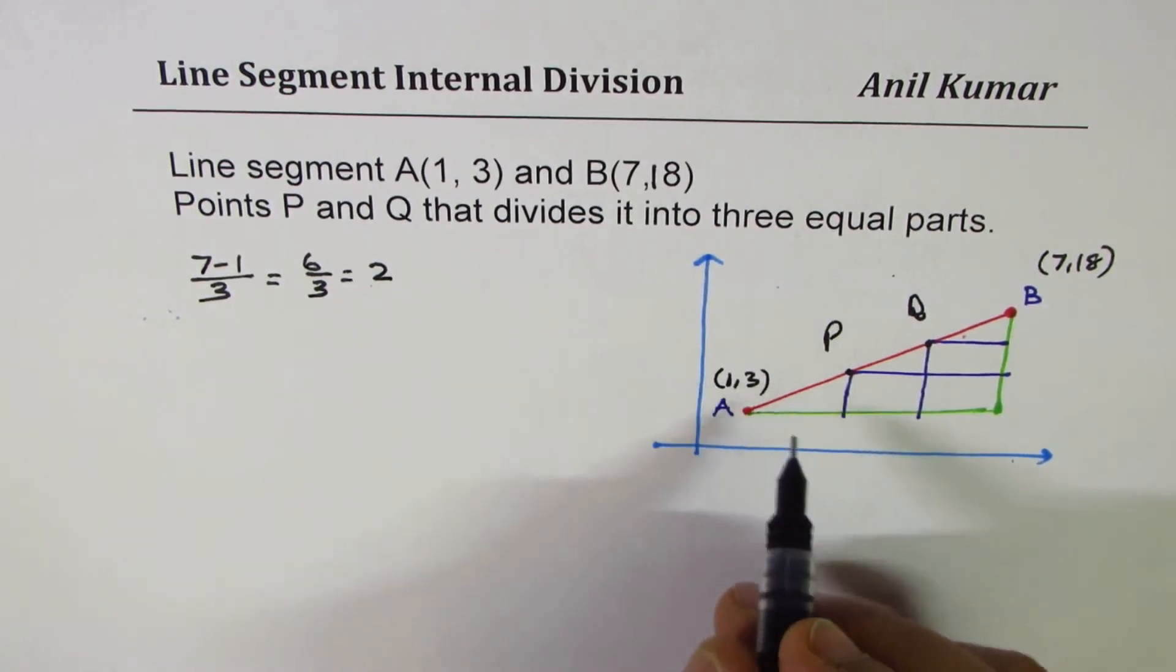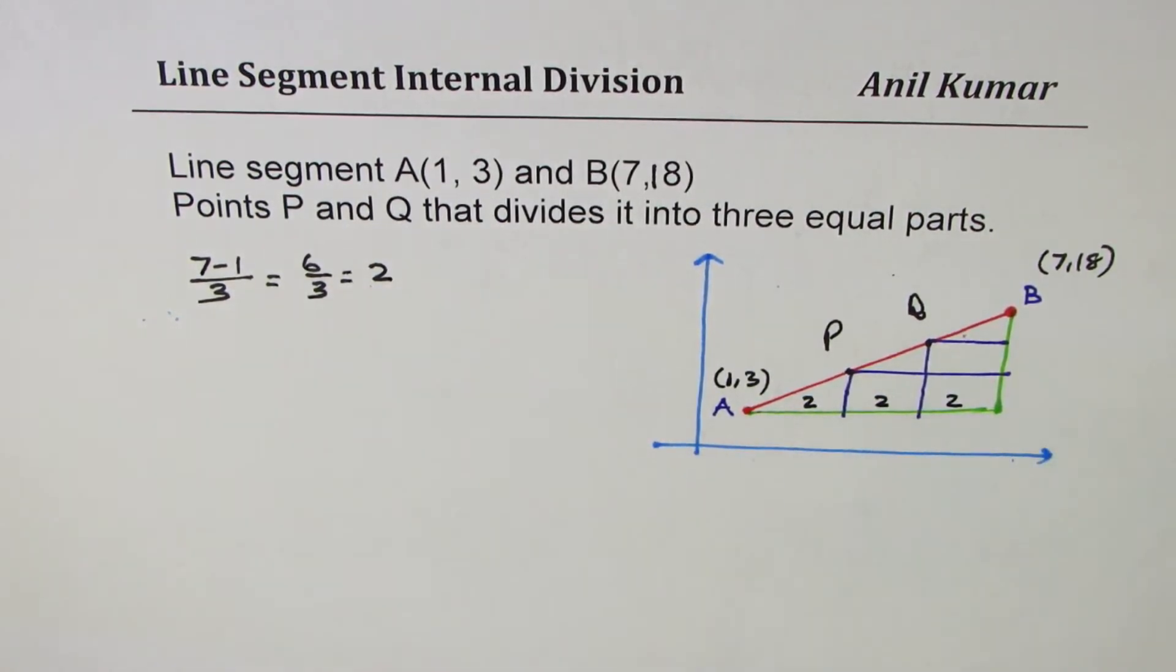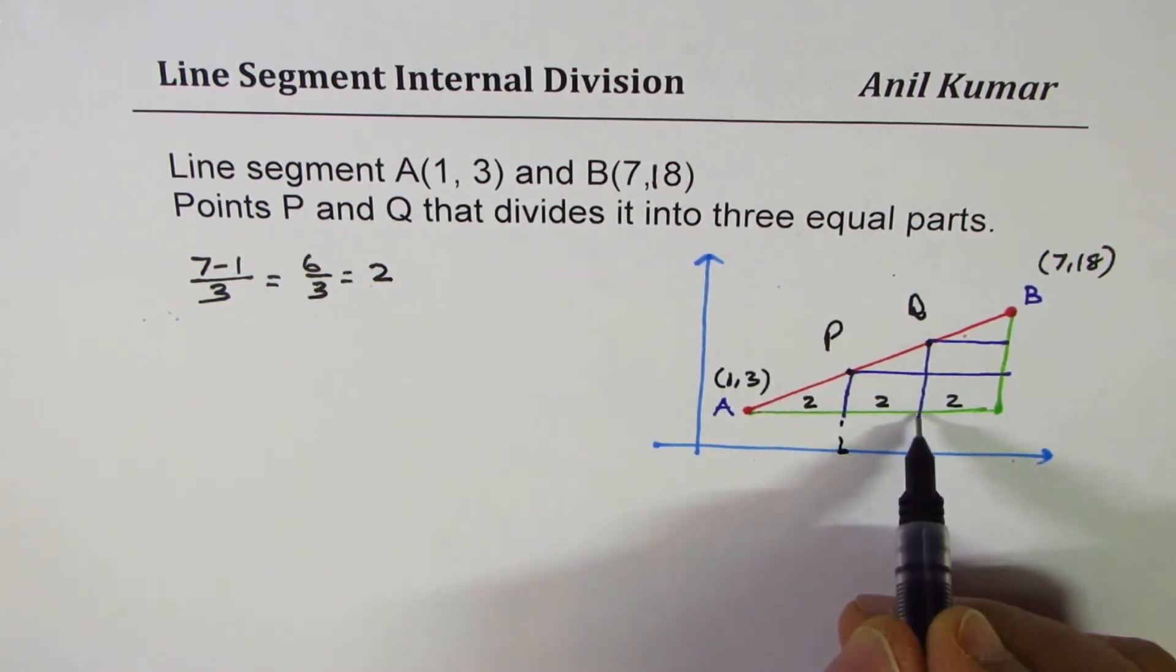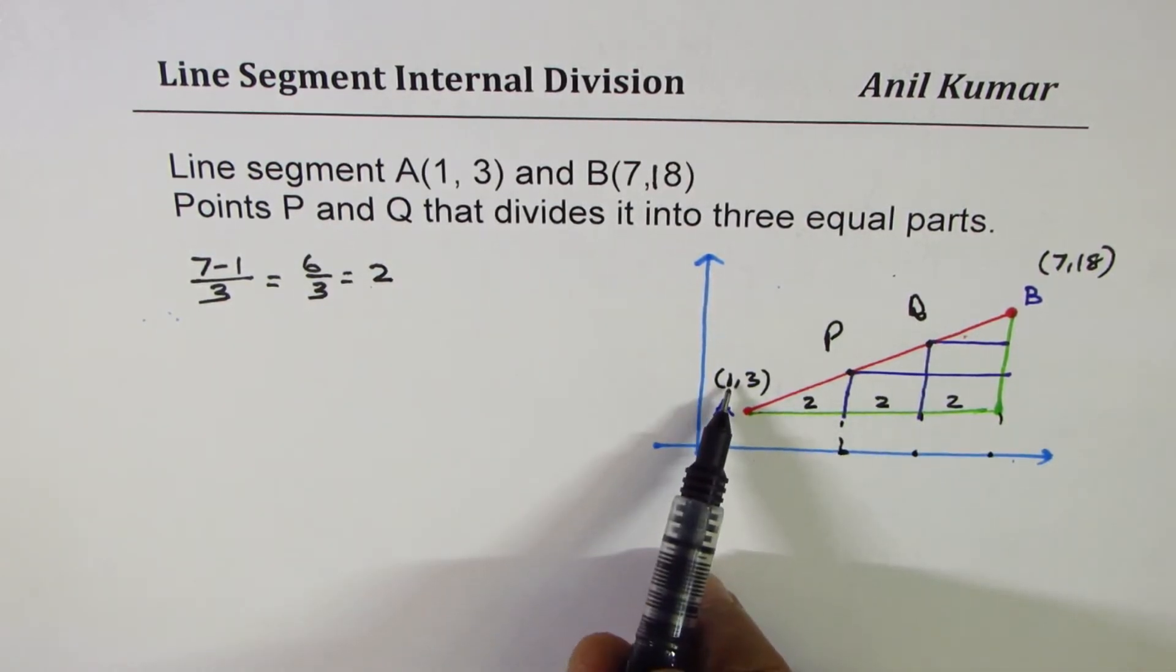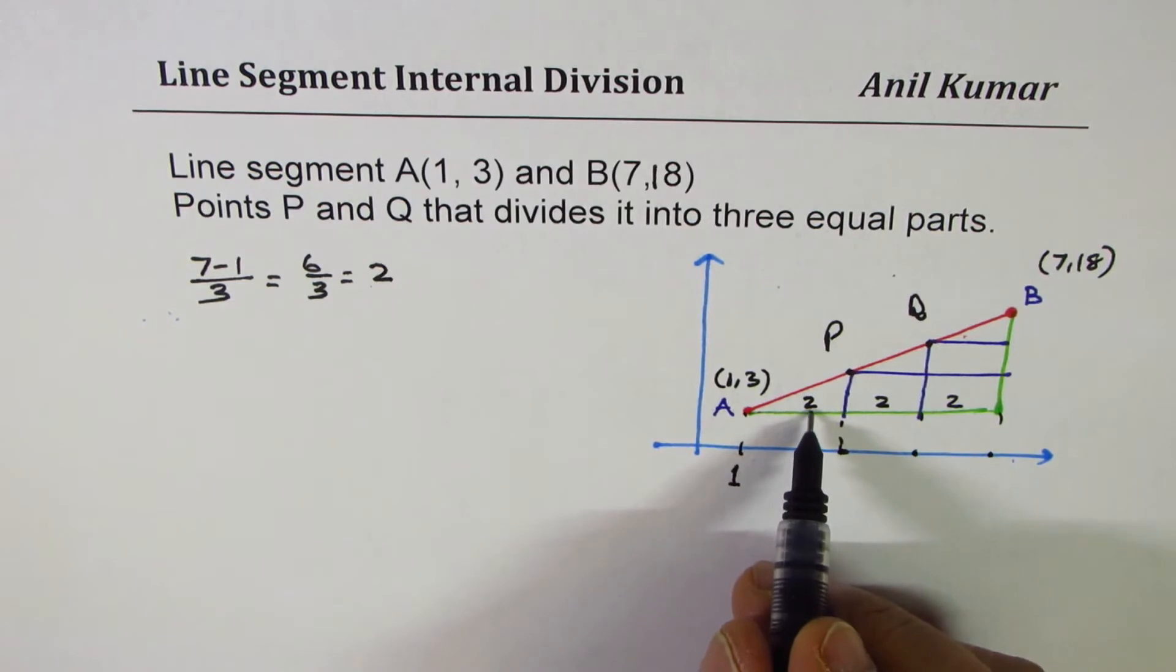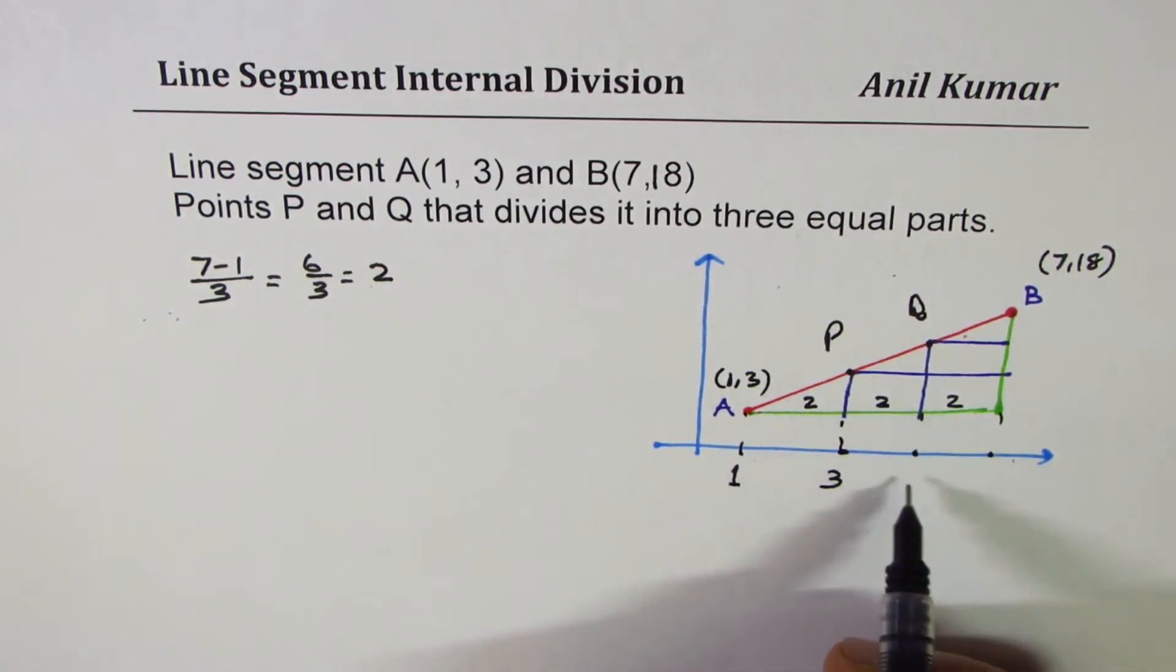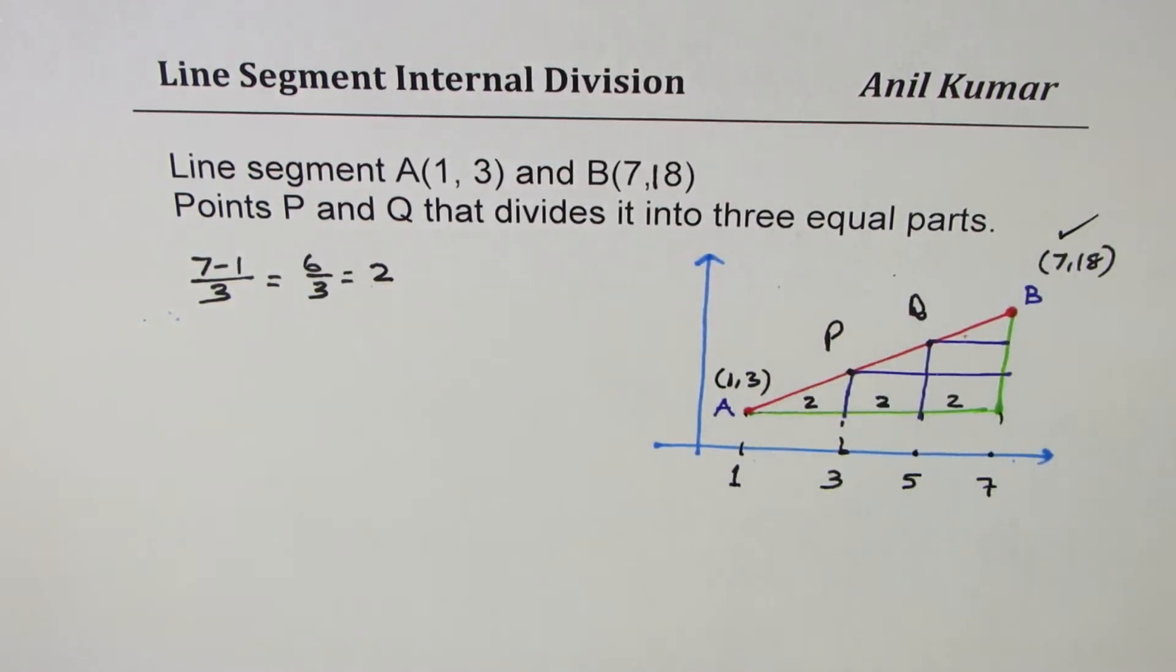From A, we got two two units. Two units to the right. That means the x values here are what? The x values will be, initially it is 1. This point here is at 1. So, what is 1 plus 2? It is 3. And what is 1 plus 4? Two more, 5 and two more gives you 7. That makes sense.